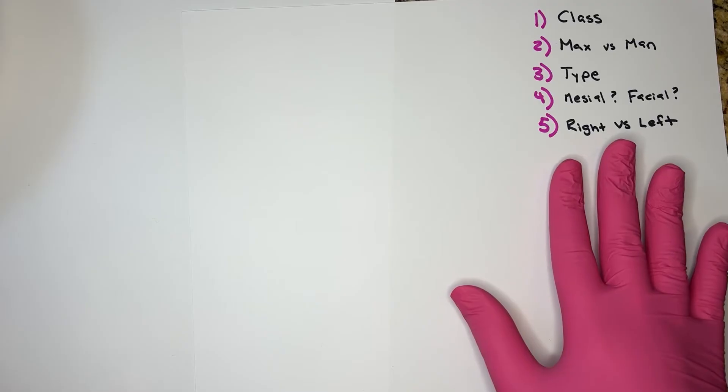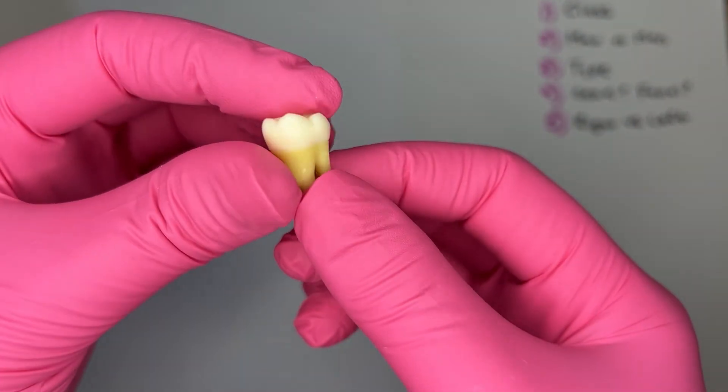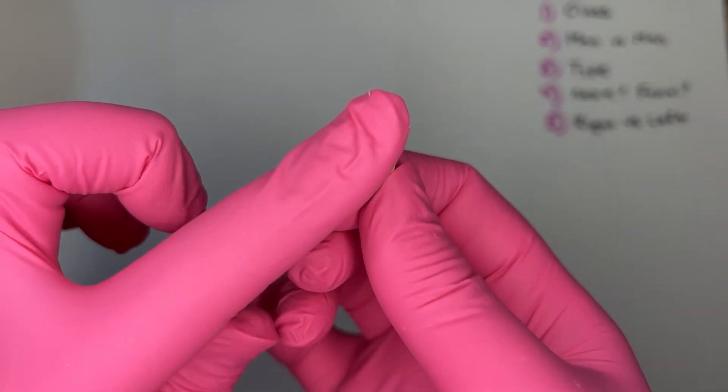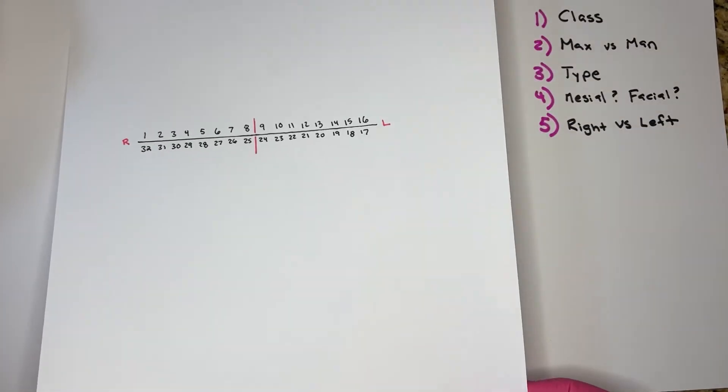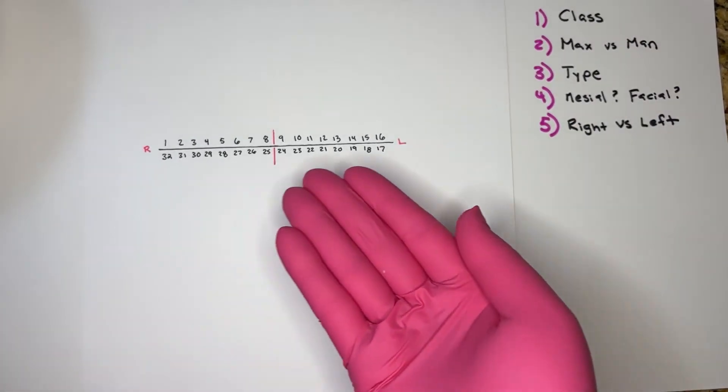Step number five, right versus left. If I take this tooth, facial facing me, mesial marked, I'm going to take it to an imaginary mouth, or if I'm allowed scratch paper, my scratch paper.